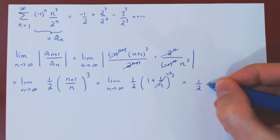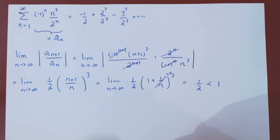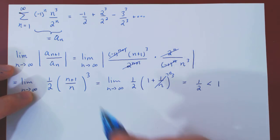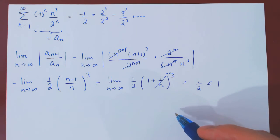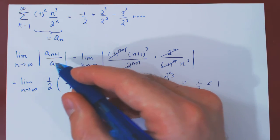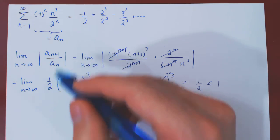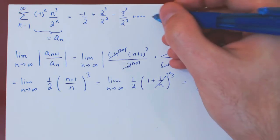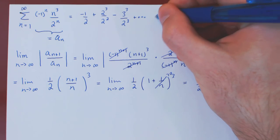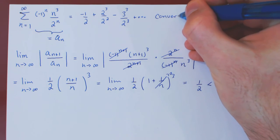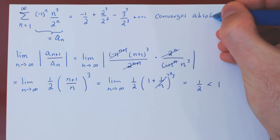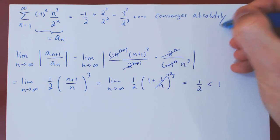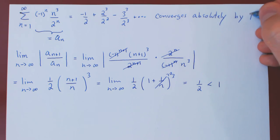And so if you recall, if this limit is strictly less than 1, the ratio test says that the corresponding series, summing the terms a_n, converges absolutely. And of course, by the ratio test.